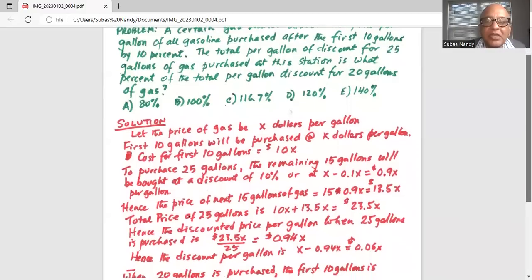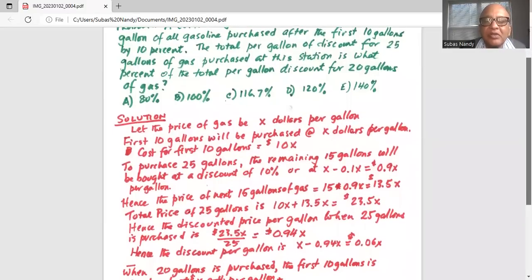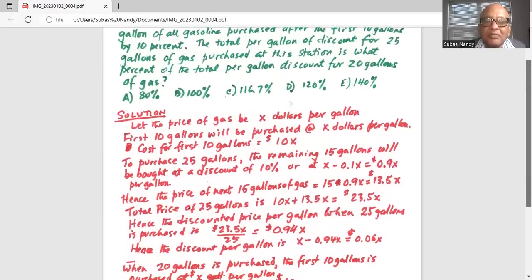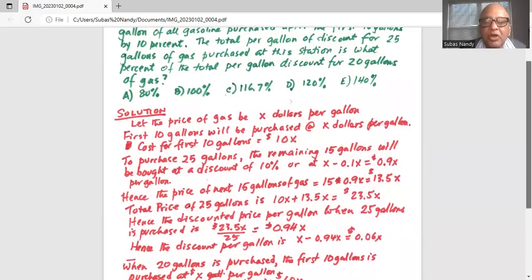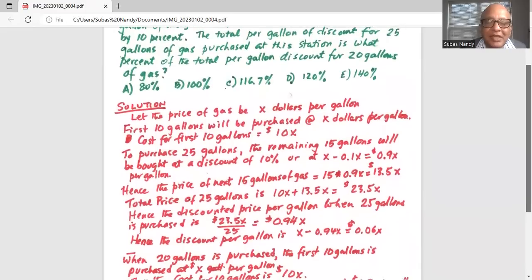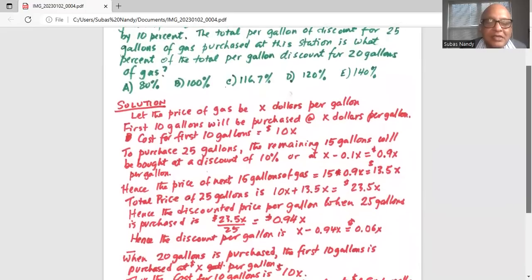So total price of 25 gallons is 10X plus 13.5X, which is 23.5X dollars. Hence the discounted price per gallon when 25 gallons is purchased is 23.5X divided by 25, which is 0.94X. Hence the discount per gallon is X